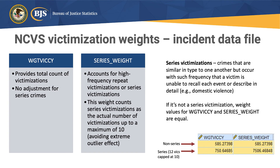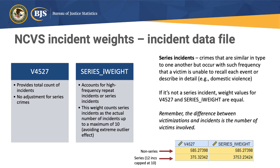For example, from the 2020 data file, a non-series weight VICCY value would be 585, and the series_weight would be the same. For a series crime where the person experienced 12 victimizations but capped at 10, the original weight was 750, and multiplied by 10 gives 7506 for the series_weight. There are also two incident weights on the incident data file: V4527, which provides a total count of incidents without adjustment for series crimes, and series_I_weight, adjusted for series crimes. The series_I_weight accounts for high-frequency repeat incidents and caps them at 10 to avoid extreme outliers. For a non-series incident, V4527 is 585 and series_I_weight is equal. For the series example, the person experienced 12 incidents capped at 10; original weight was 375, multiplied by 10 gives 3753.